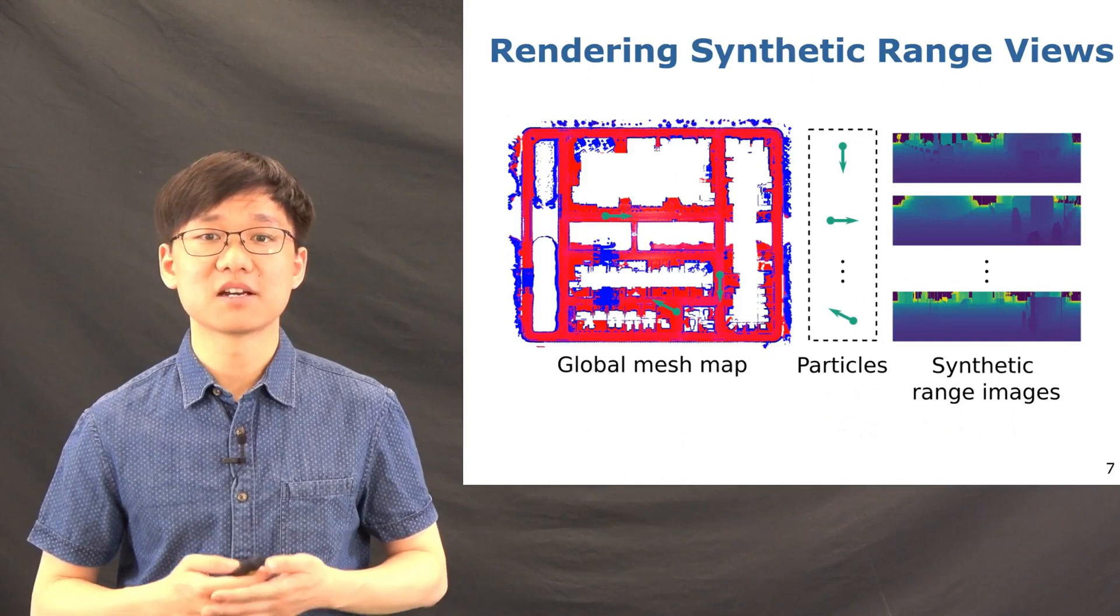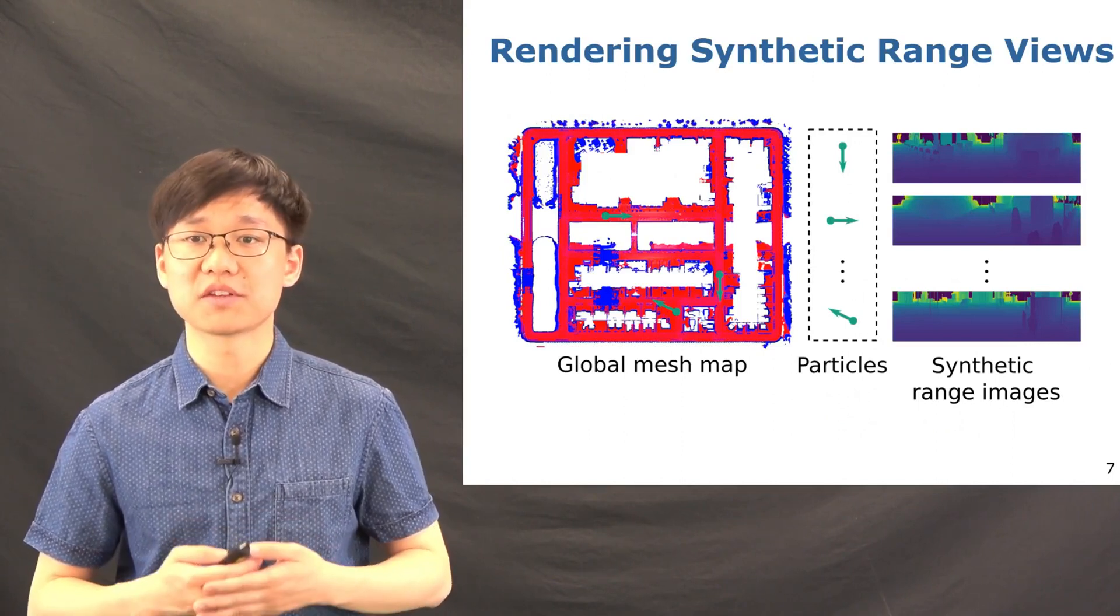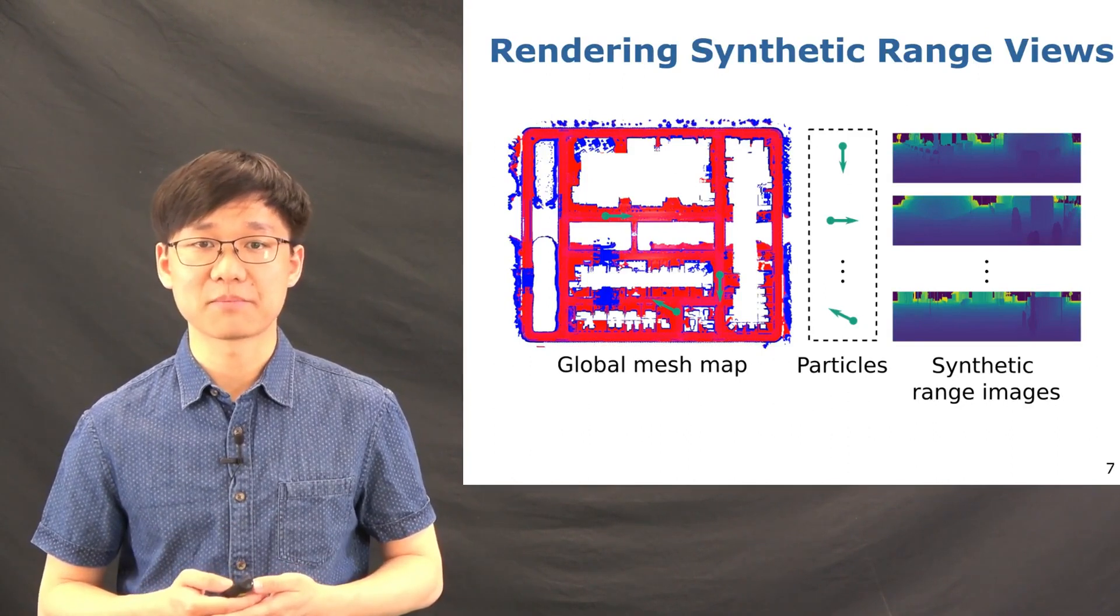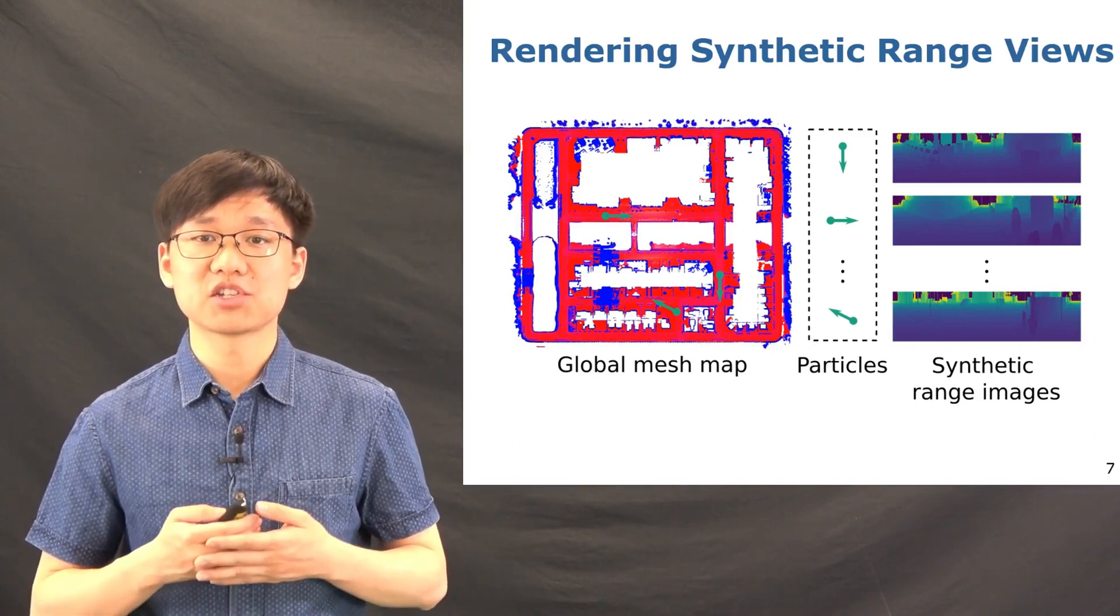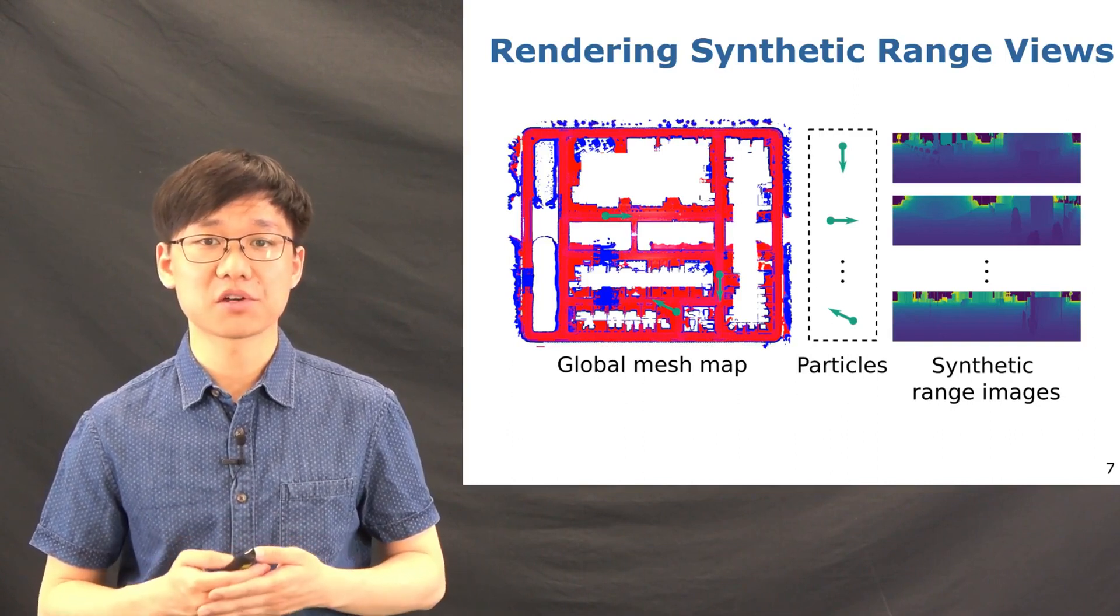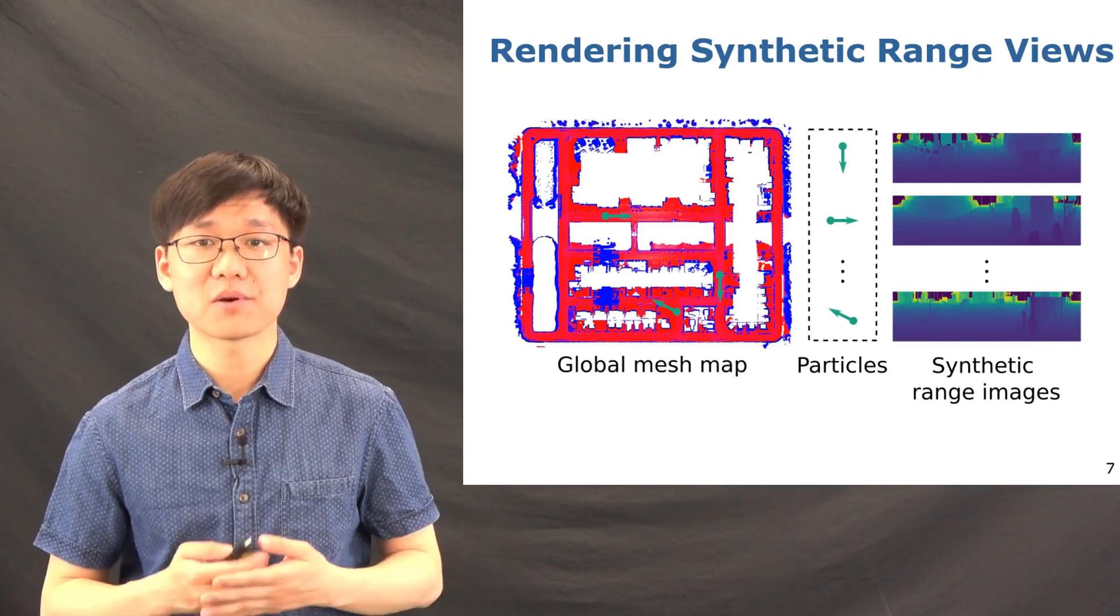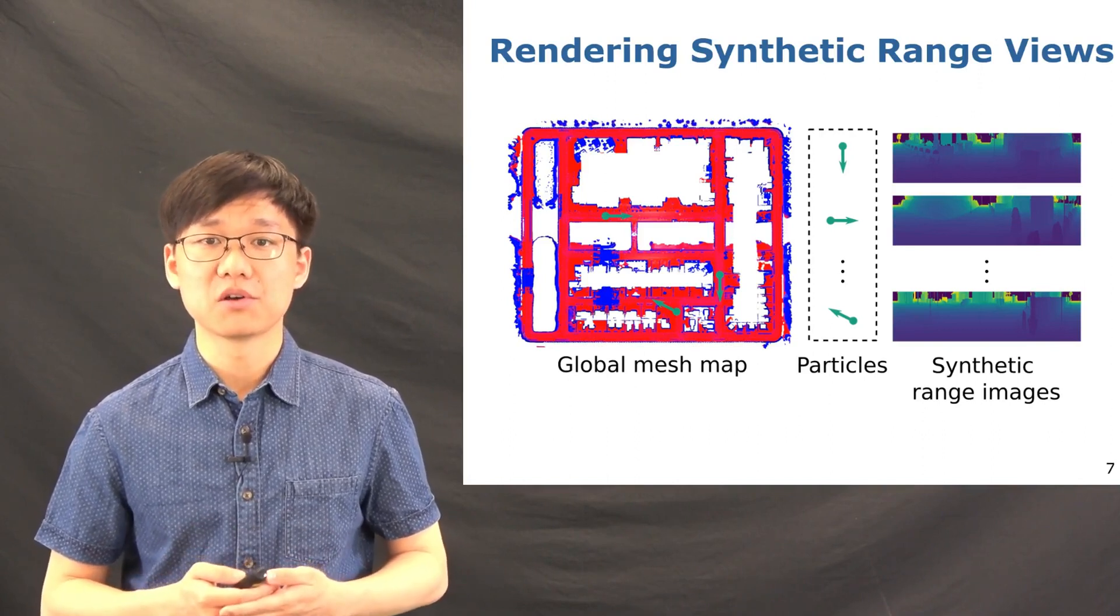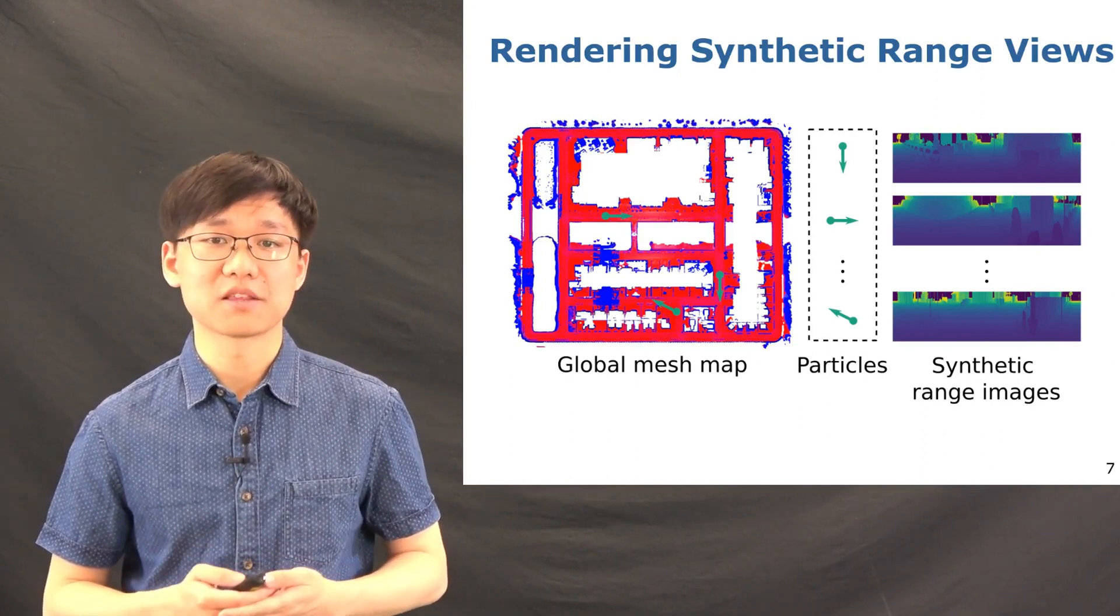After we get the triangular mesh map, we can then use GPU with OpenGL shaders to fast rendering the range image views for each particle in the map. What we do in the runtime is actually just to give a bunch of particle positions and the triangular mesh map to the graphic card. And the graphic card can parallel generate the synthetic range images for each particle, which is very fast and enables our methods to run online after converges.